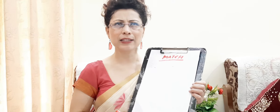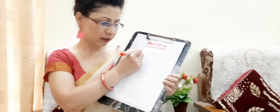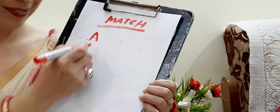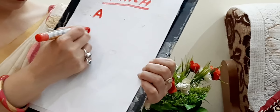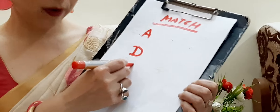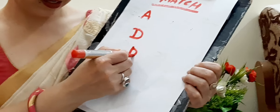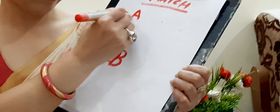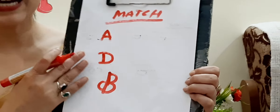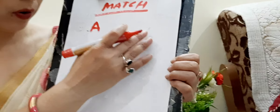For example, let me have this side capital A. This side I have written the capital alphabets — capital A, capital D, capital B. Now here I am going to write small alphabets. They are not in any particular order.